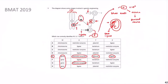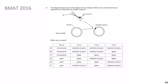Now let's look at BMAT 2016 question 5. The diagram shows stages of how a length of DNA can be removed from one organism and introduced into another, and asks which row is correct. Having covered the previous question, you should be confident — give it a minute before we go through the solution.